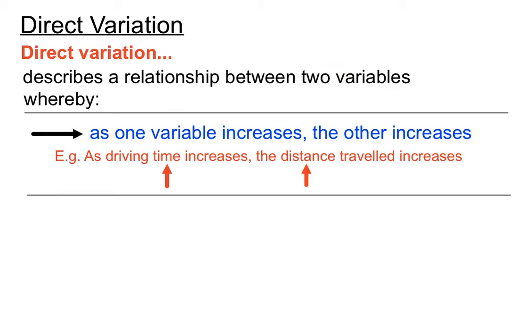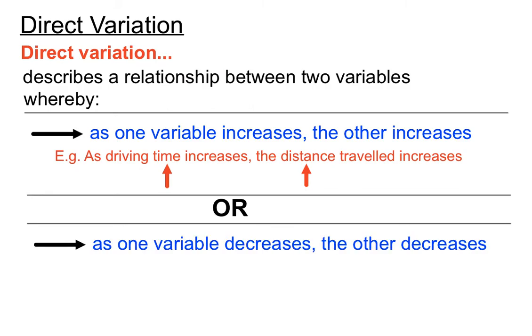The other way you get direct variation is where one variable decreases while the other one decreases. For example, if I'm on a diet, as my food intake decreases across the weeks and months, my waist measurement hopefully will decrease as well. If you decrease something, if you cut your food intake, then your waist measurement might decrease as well.